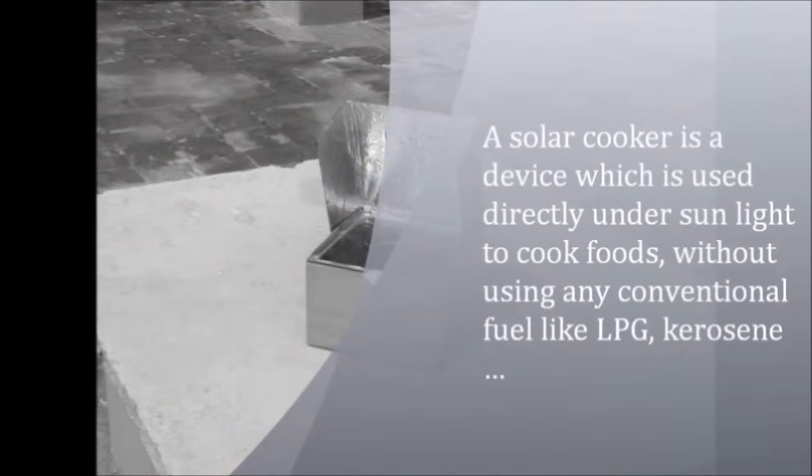Hello there, we are going to discuss about a solar cooker and we will make one at home. A solar cooker is a device which uses sunlight directly to cook food without using any conventional fuel.